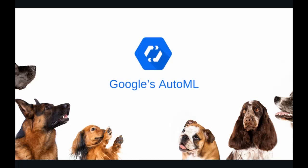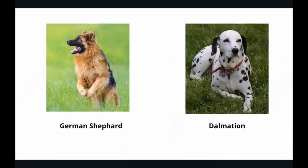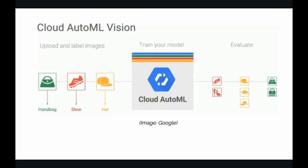Even non-developers can use Google AutoML to build high quality AI models. For simplicity, we shall be developing a model to identify only two breeds of dog: a German Shepherd and a Dalmatian. Here is the workflow of Cloud AutoML Vision — first we upload the images, then label the images, then train the model, and finally evaluate the model to understand whether it is performing as per our expectation.